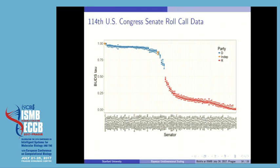Plotting the senators according to our recovered coordinates, we see the Democrats separating from the Republicans neatly. Interestingly, Senator Bernie Sanders, who was at the time considered independent, is plotted on the far left, which may be reasonable as his policies tend to be considered socialist.